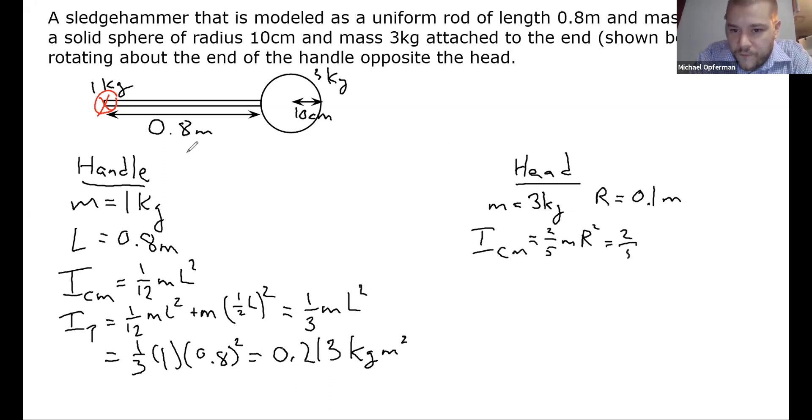So we've got ICM is 2 over 5 MR squared. So that's 2 over 5, times 3, times 0.1 squared. And so that'll be 2 divided by 5, times 3, times 0.01, is 0.012 kilogram meter squared.